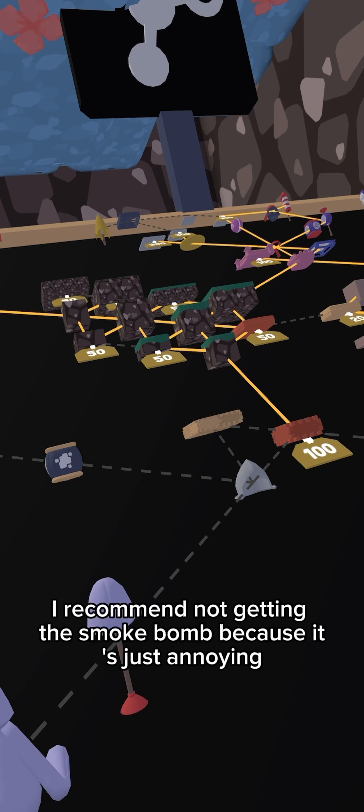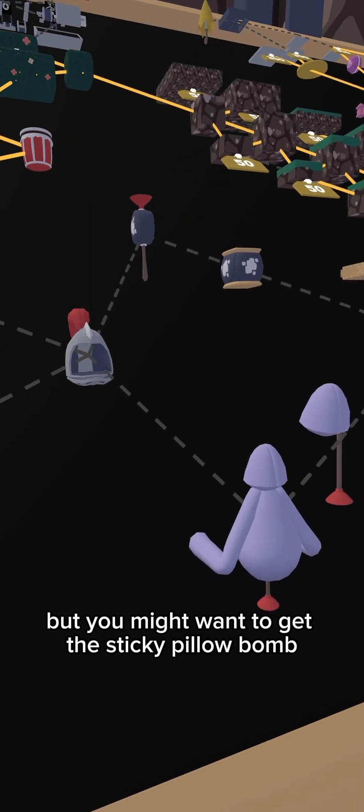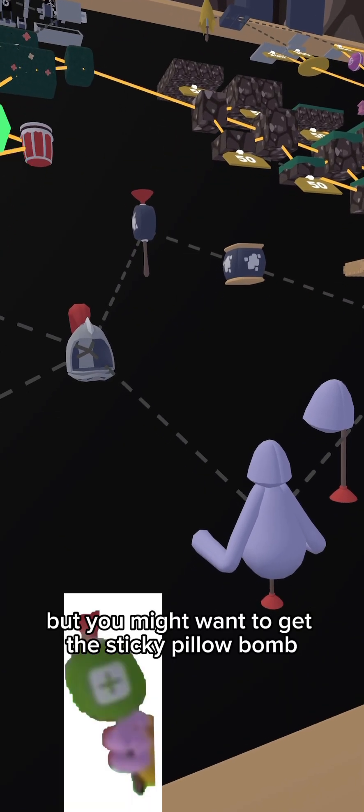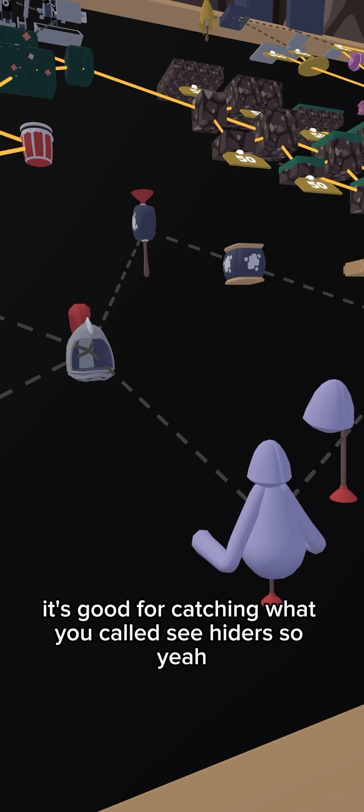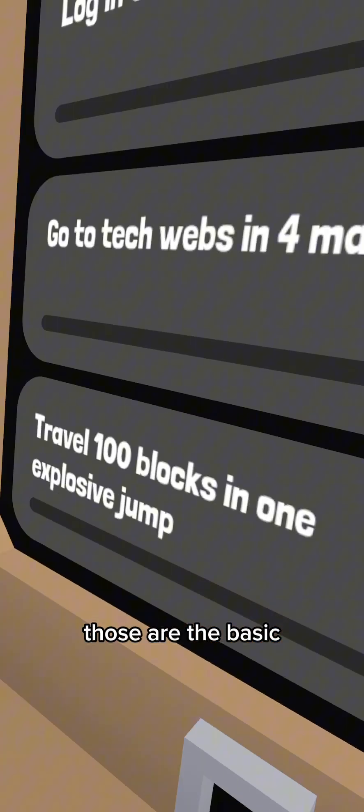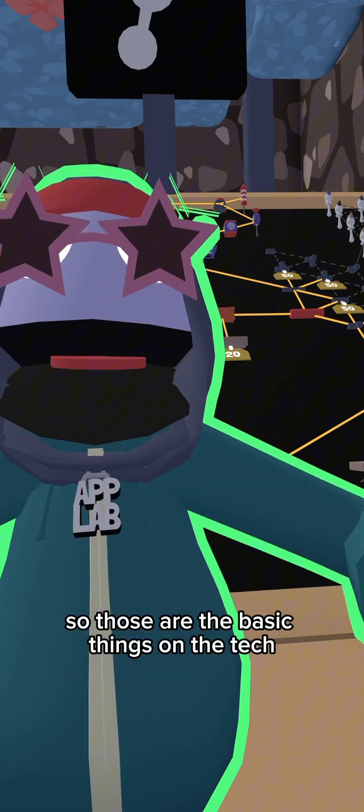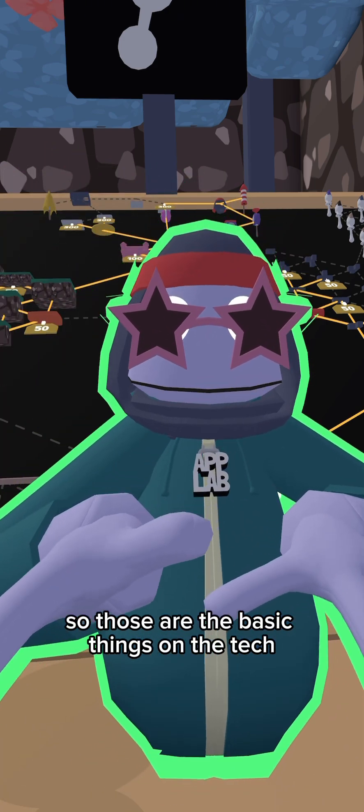Yeah, so that's really the basic stuff you need. And if you want to get the advanced stuff, I recommend not getting the smoke bomb because it's just annoying and lags your game. But you might want to get the sticky pillow bomb - it's good for attaching, what's it called, seat hiders.